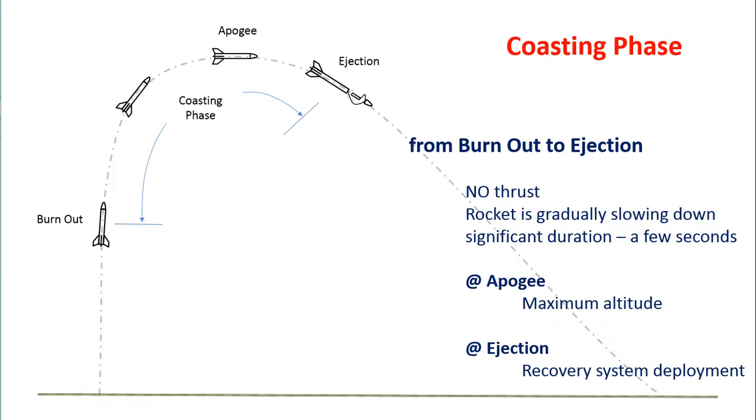After the acceleration phase, the rocket enters the coasting phase. The coasting phase lasts from burnout all the way to ejection. During the coasting phase, no thrust is being produced because the engine has already burned out all of its fuel.